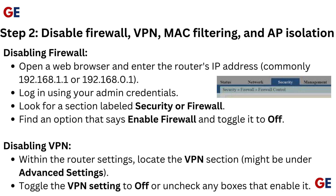Disabling VPN: Within the router settings, locate the VPN section — it might be under Advanced Settings. Toggle the VPN setting to off or uncheck any boxes that enable it.